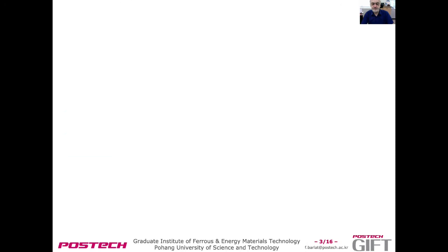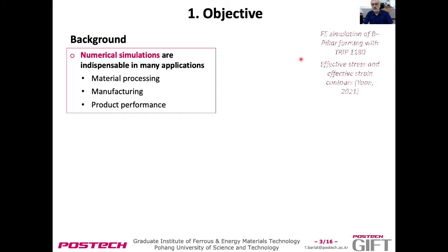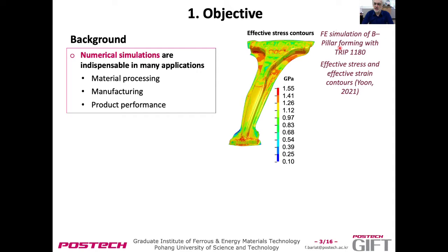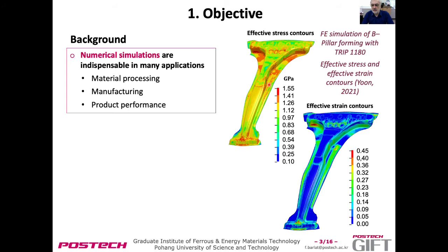The objective involves numerical simulation. Here is an example of a B-pillar for a TRIP 1180 steel sheet. We can see the stress contour, which may be useful for the calculation of springback. We may also represent the strain contour, which gives indication of the location where potential failure is possible.